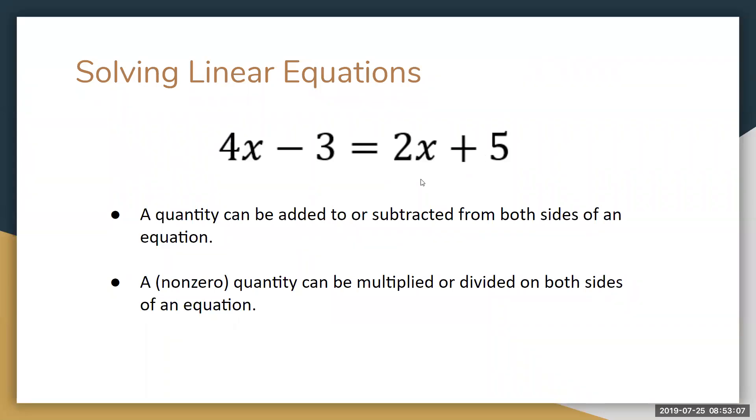For example, in this equation here if I want to get all my x's on one side, I might choose to move the 2x to the left-hand side to combine it with the 4x. Because it's a positive 2x right now, I could get rid of it by subtracting 2x from both sides. So good old algebra techniques that we'll be reviewing and implementing when we work with some linear models.